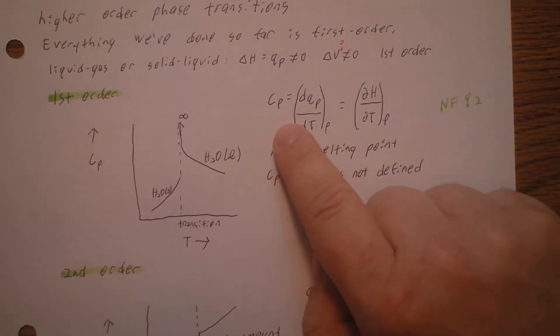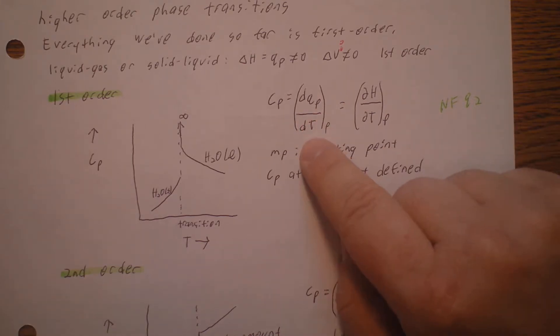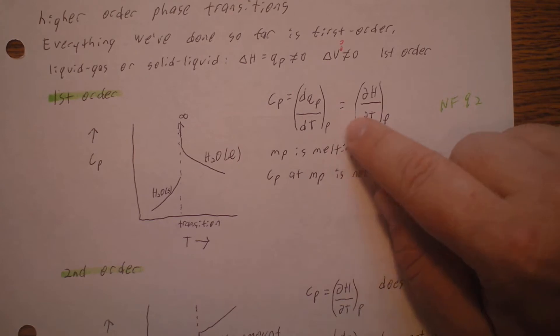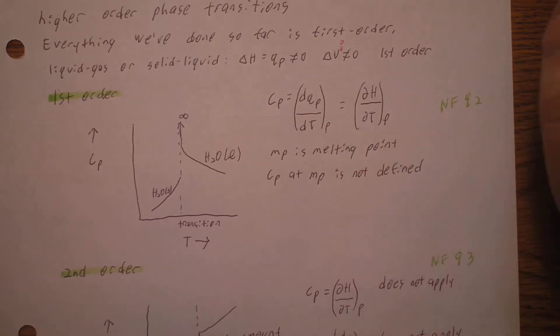Remember, CP, the heat capacity at constant pressure, is the differential of heat at constant pressure, or the derivative of heat with respect to temperature at constant pressure, or equal to the derivative of enthalpy with respect to temperature holding pressure constant.